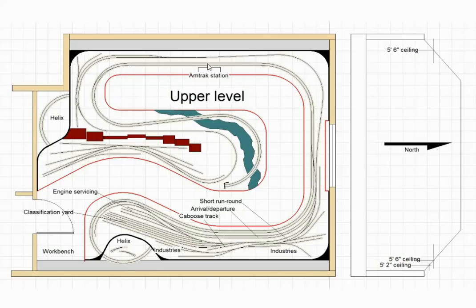The arrangement of this Amtrak station is totally prototypical and there's plenty of room for it here — a decent-sized building and the start of a parking lot in front, instead of cramming it in where there's no space in front of the yard. At this point I left the customer to mull over the upper deck design and went to work on the diorama level.